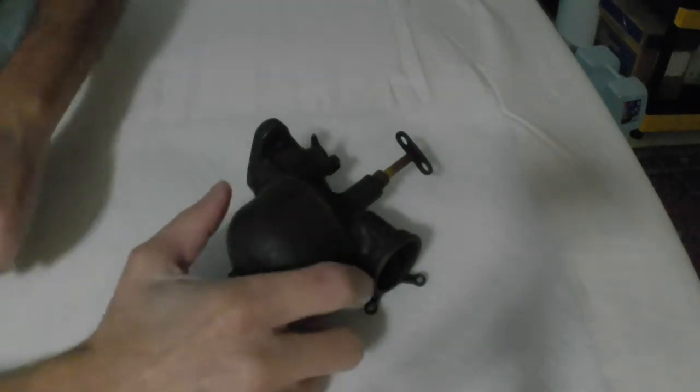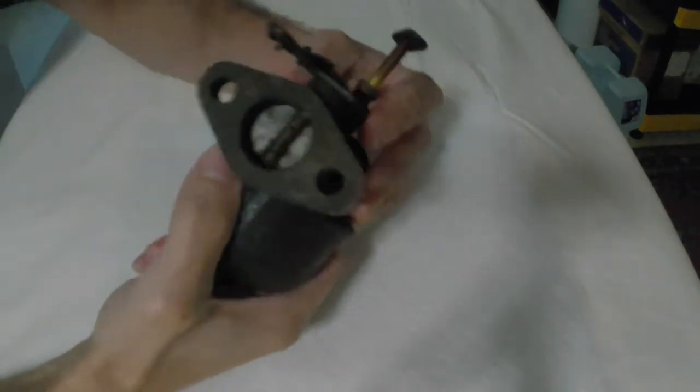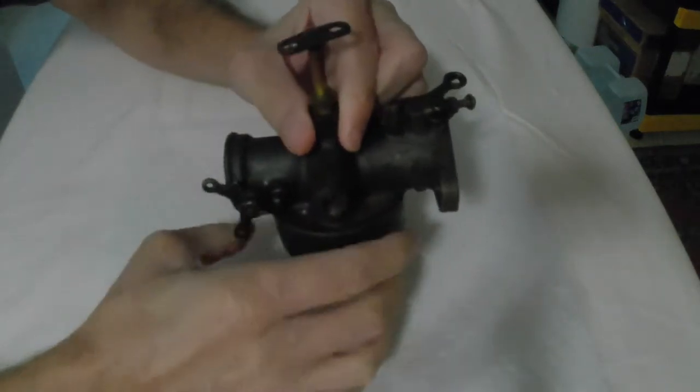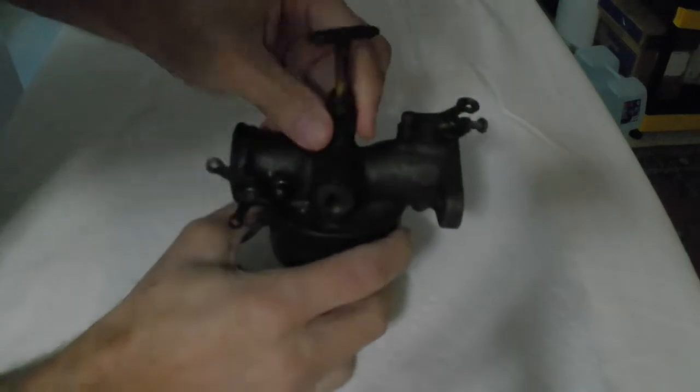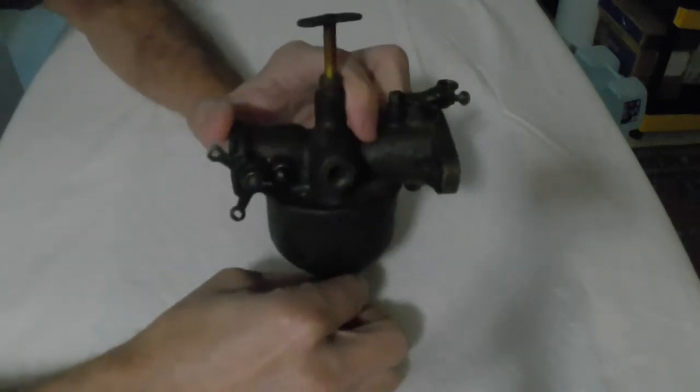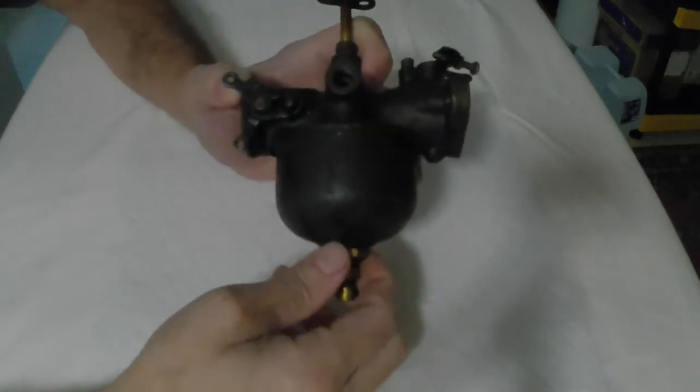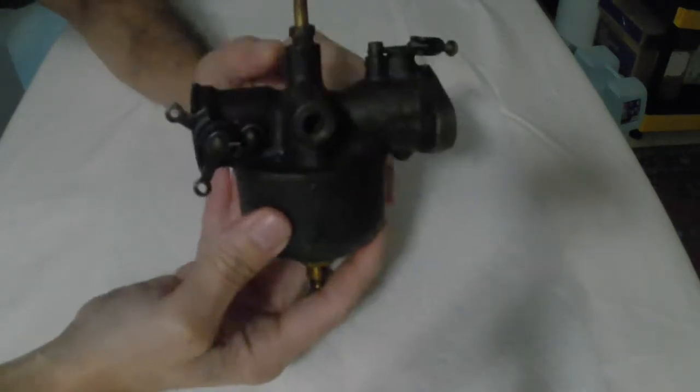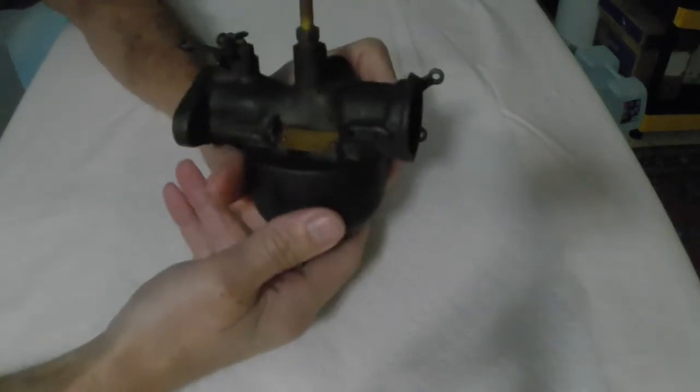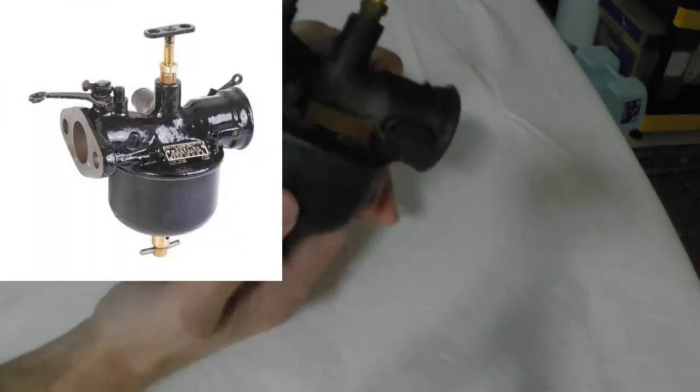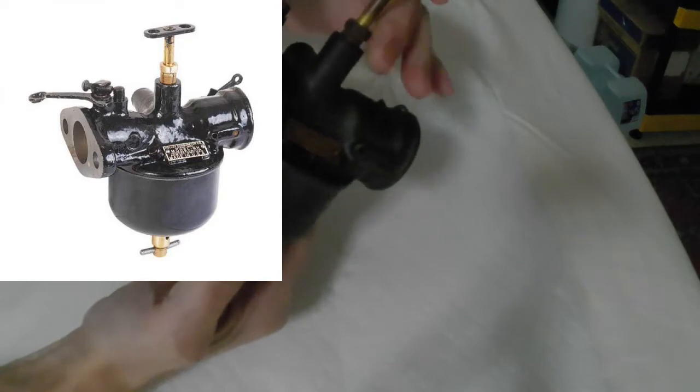Alright, welcome back everybody. We have another part for our project. We're missing a fuel inlet and what I wanted to do this time is to go over what you'd be looking for if you went to a flea market or found this in a garage someplace. This is a Holly NH carburetor.